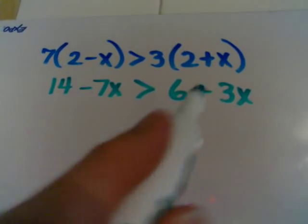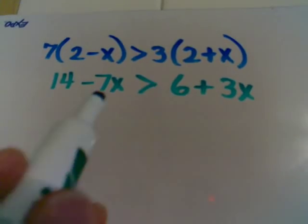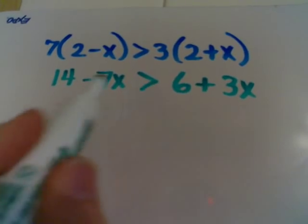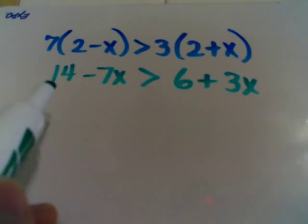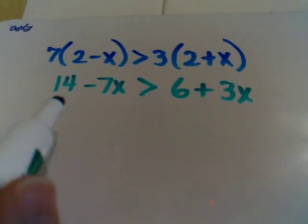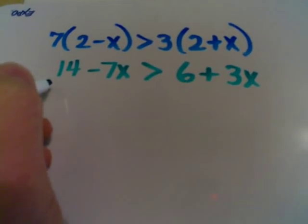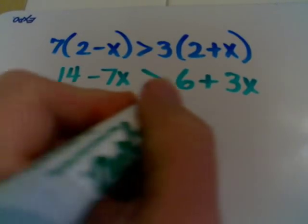Normally with equations I don't care what side you get the variable on. A lot of times with inequalities I prefer for students to get the variable on the left because then they tend to read the inequality correctly at the end when they're graphing. So let's subtract 14 from both sides.